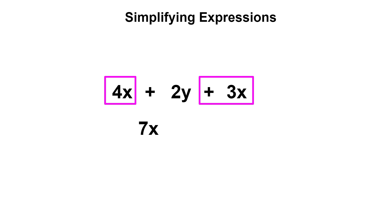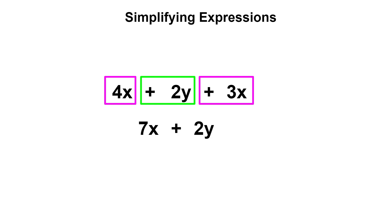Now that we've combined all terms with variable x, let's continue with the next term, which is 2y. Be sure to also include the operation to the left of the term. Since 2y is the only remaining term with nothing to combine it with, I'll bring it along with the addition sign into the simplified expression. So we have 7x plus 2y — these terms cannot be combined since they have different variables. So 4x plus 2y plus 3x equals 7x plus 2y.